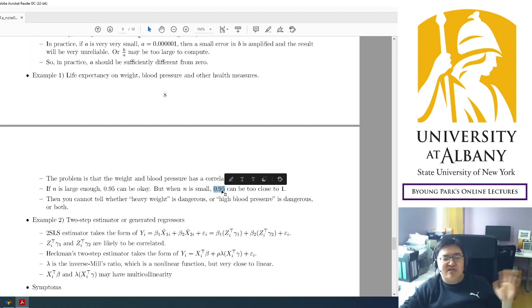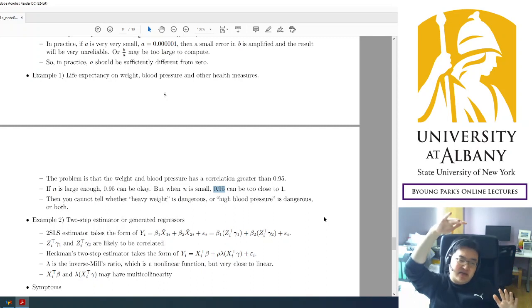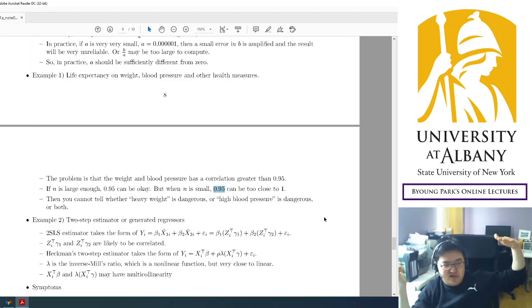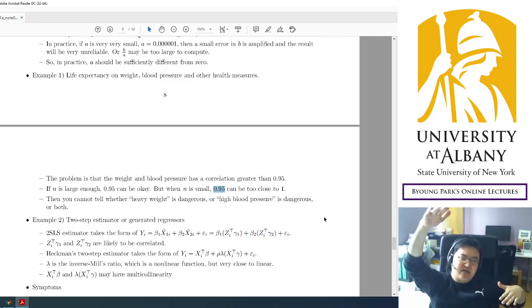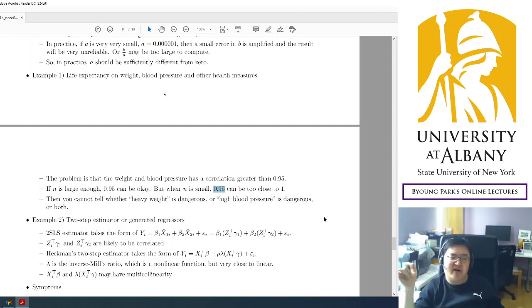So you have to relax the definition of the problem a little more in finite sample for calculation, for computation. So, one example, you would like to estimate, predict life expectancy using weight, blood pressure, and other measures. However, what's interesting here is the weight and the blood pressure are highly correlated. So the heavier an individual is, the higher the blood pressure is likely to be. And from the data, you can find that the correlation is 95%. So, theoretically, this is not 1. But, you may think it's too large. 0.95 can be close to 1, which is relative.